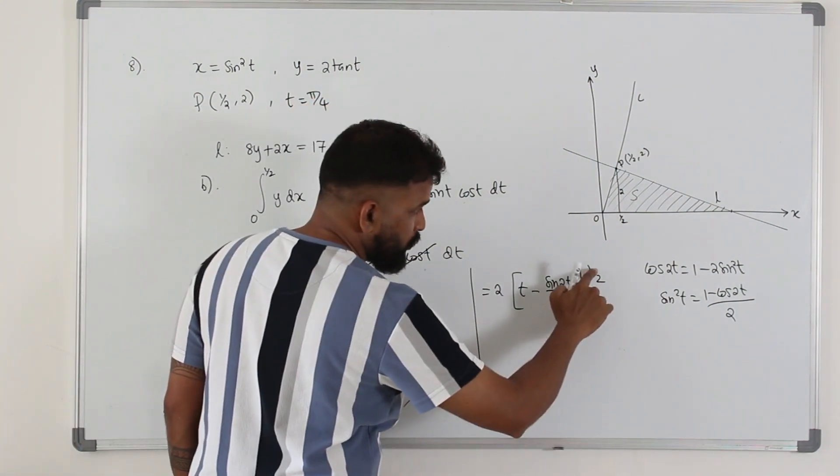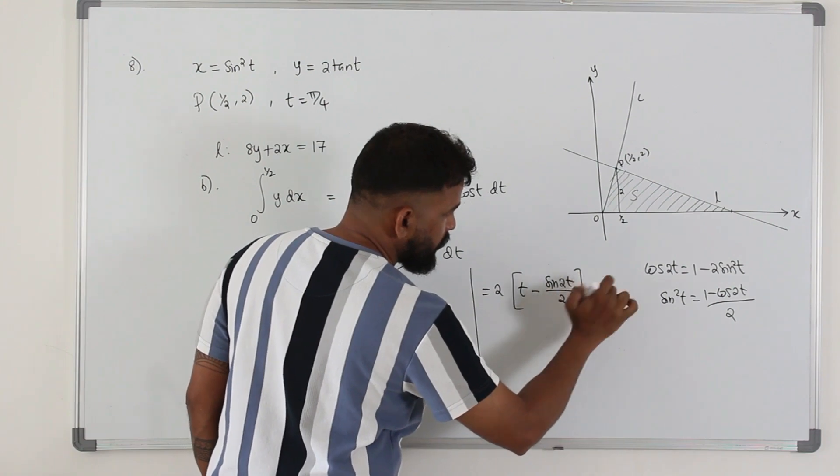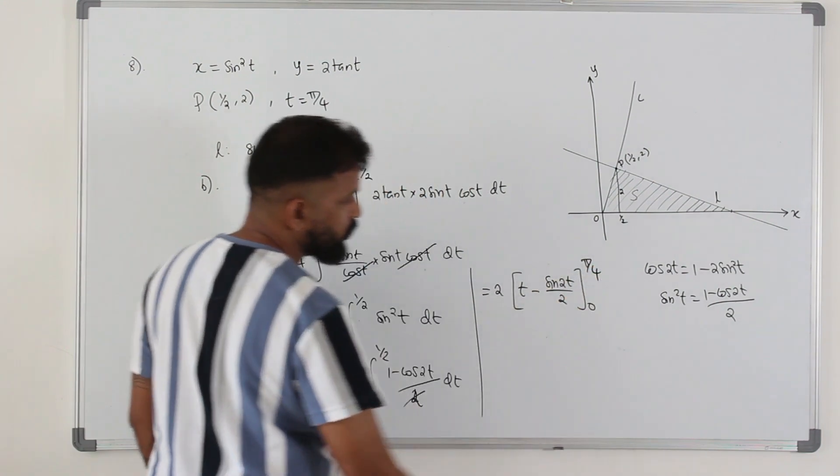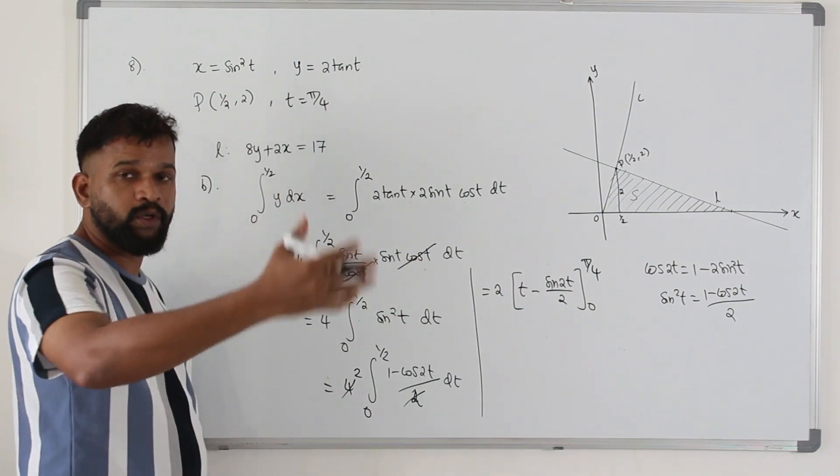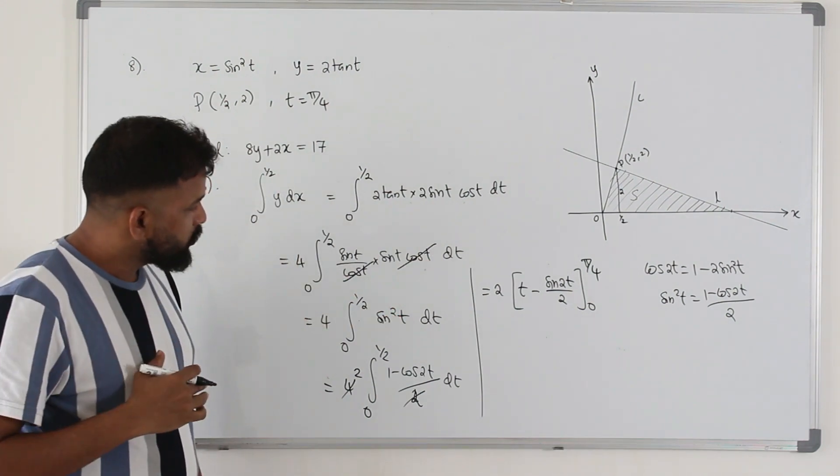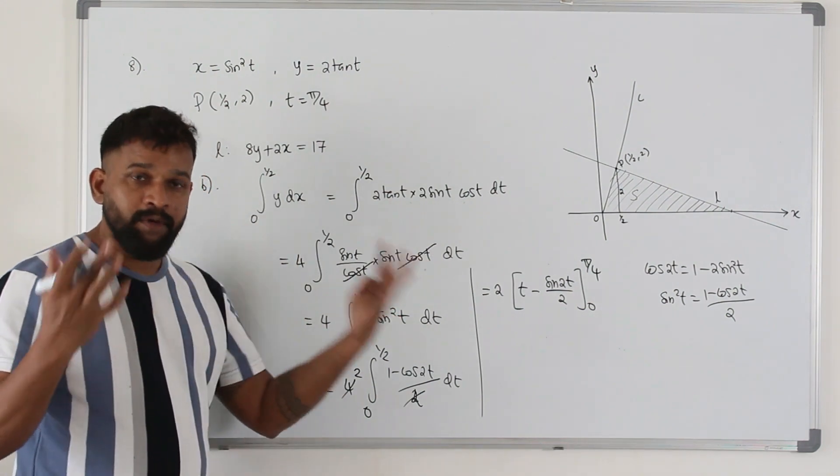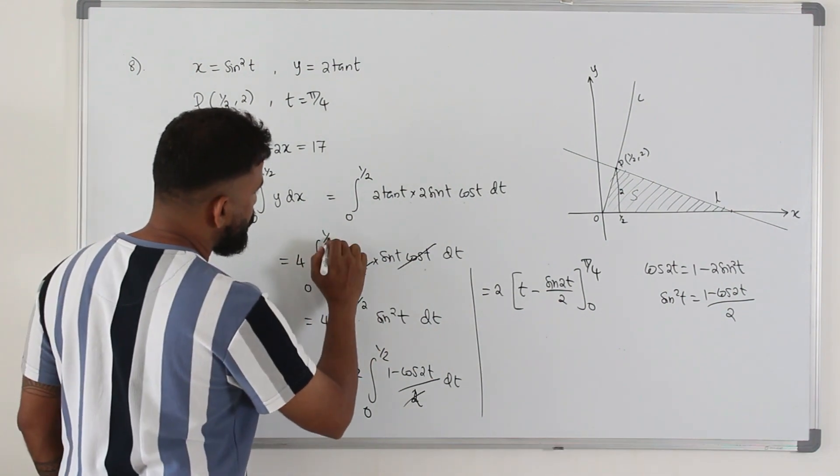So instead of using 0 to pi over 2, 1 over 2, you should have used 0 to pi over 4. So I'm not going to correct my mistake. I'm going to leave this in the video so you understand how to integrate this and what limit should be applied. So it has to be pi over 4.